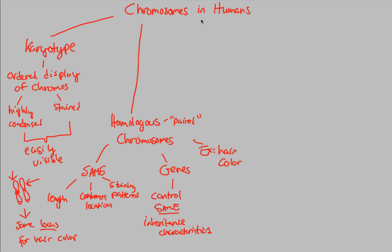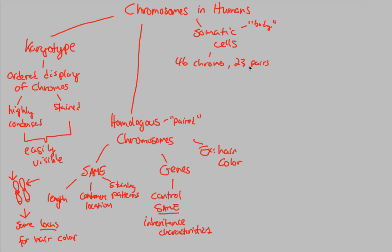Moving forward, other types of chromosomes we have to understand are those found in somatic cells. Somatic cells refer to the body cells — every cell that is not a sex cell is considered a somatic cell. These somatic cells have 46 chromosomes arranged in 23 homologous pairs. We've established this in previous videos, and now we can use the better terminology: 23 homologous pairs of chromosomes.